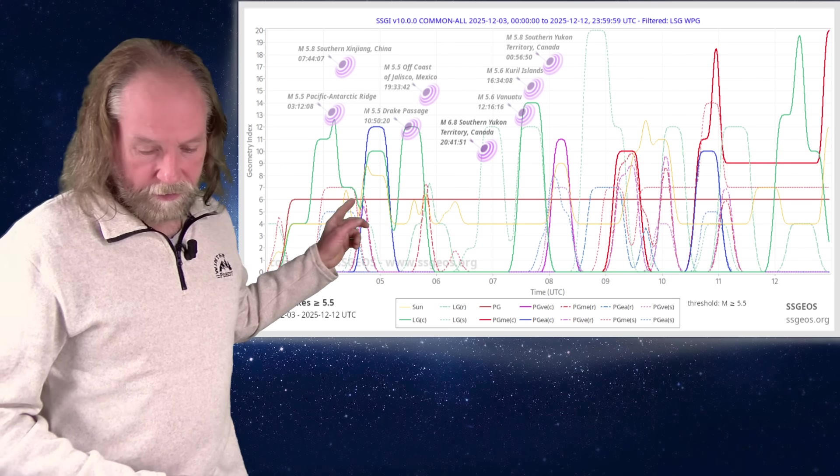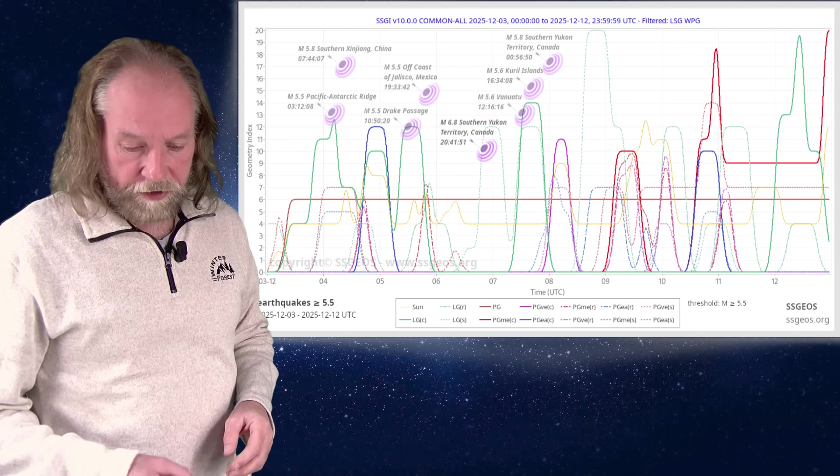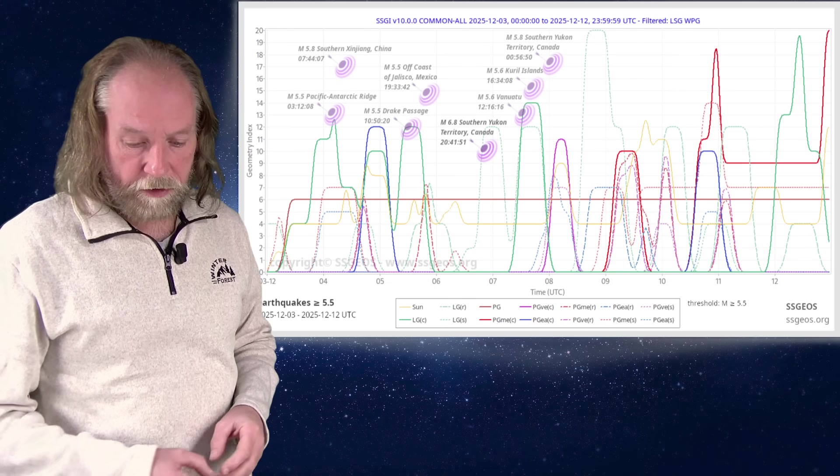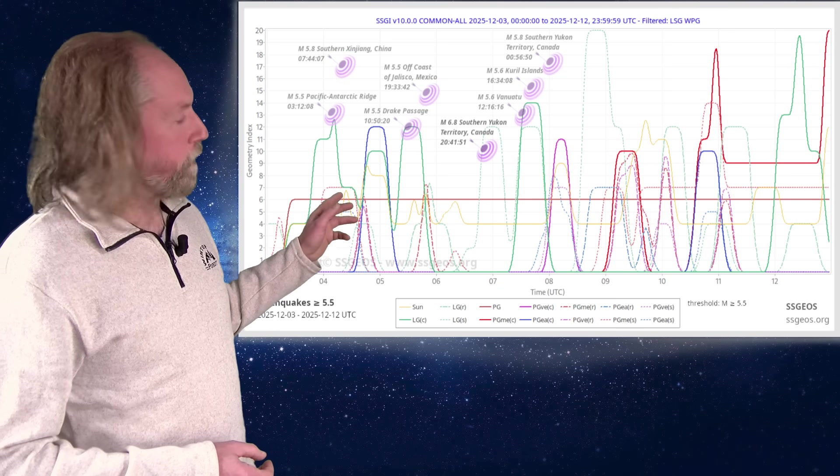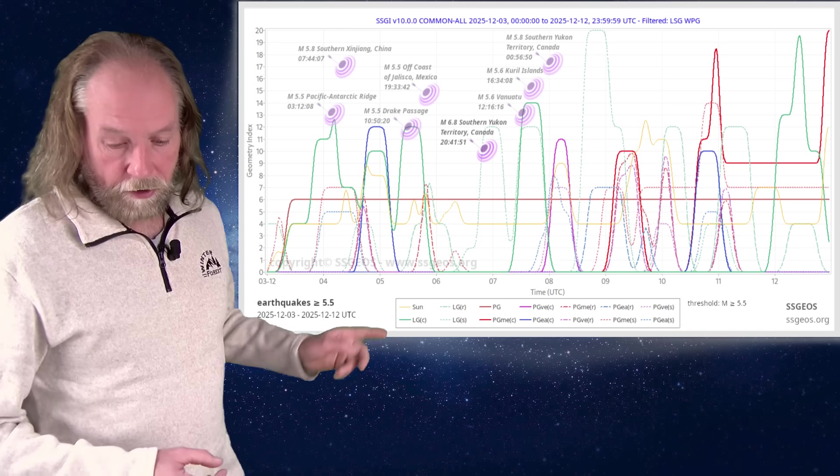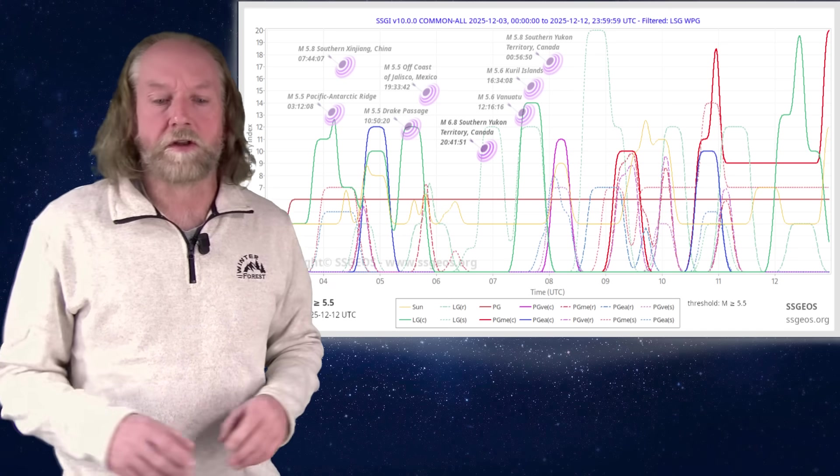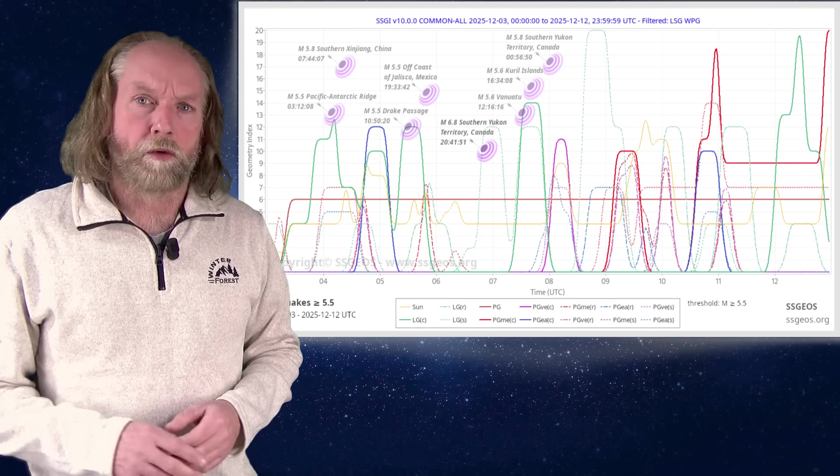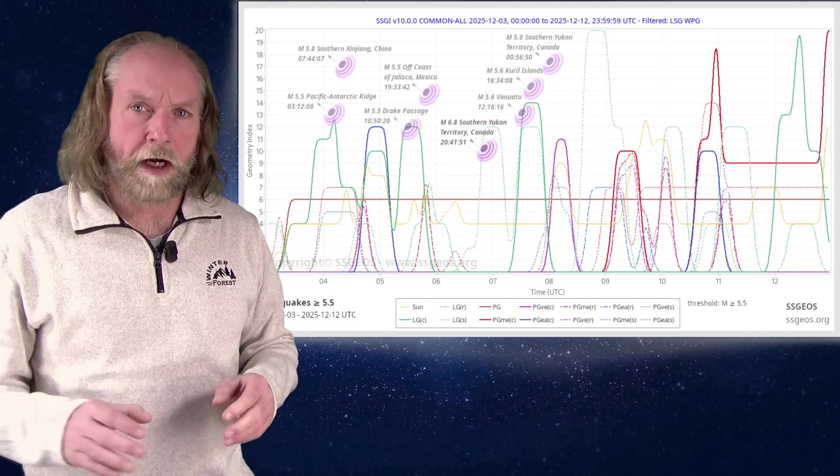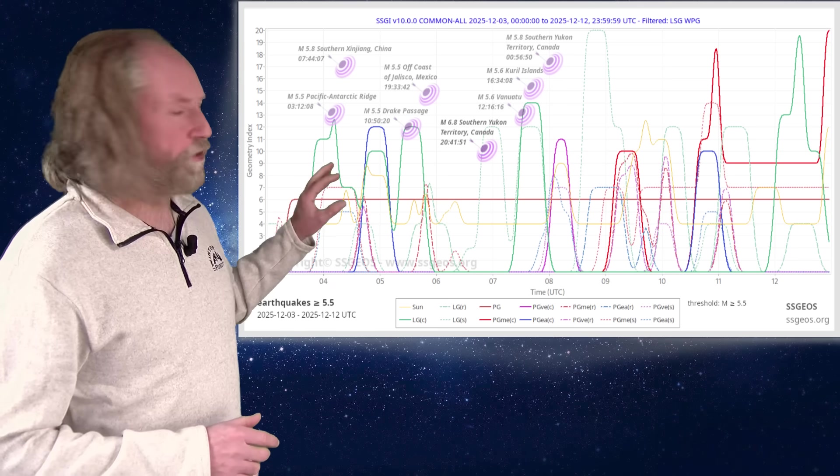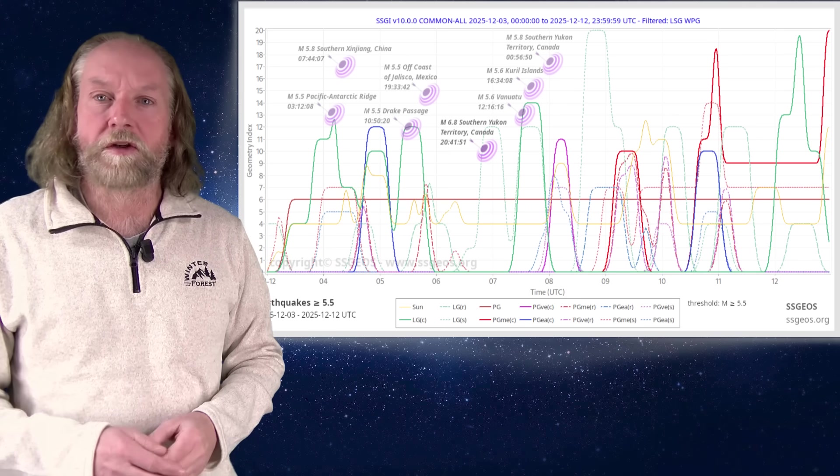peaking 5.8 in southern Xinjiang, China. And then within two days of the Moon-Mars alignment, we see on the 7th, magnitude 6.8 in southern Yukon Territory, Canada, and also 5.6 at Vanuatu, 5.6 at the Kuril Islands, and another aftershock 5.8 in Canada. So we have tight clustering of stronger earthquakes in various locations, and that's very typical for specific geometry in the solar system which causes increased tidal forcing. And that's directly responsible for this typical temporal clustering of stronger earthquakes in various locations on the planet.